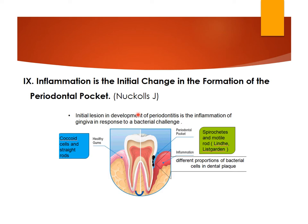Finally, Nicols proposed that inflammation is the main initial change in periodontal pocket formation. The initial stage is gingivitis — the initial variation in the development of periodontitis is inflammation of the gingiva caused by bacterial challenge. Healthy gums harbor more beneficial bacteria such as coccoid cells and straight rods, whereas in gingivitis and periodontitis cases there will be more spirochetes and motile rods. This shift in the bacterial composition is the reason behind pocket formation.